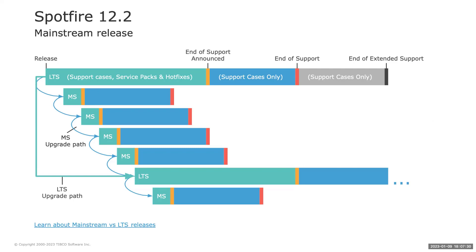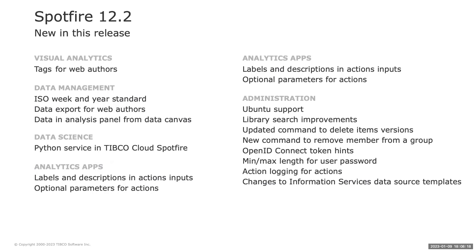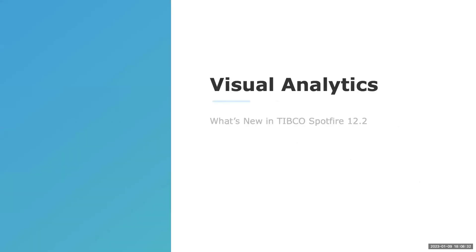Spotfire 12.2 was released just a few days back. This is a mainstream release — we have mainstream releases approximately every one to two months, dedicated to customers who want the latest features as quickly as possible. Spotfire 11.4 and Spotfire 12 are the current LTS releases and are not affected by this release, though LTS users will find these features in the next LTS. In this release, Spotfire 12.2 adds support for Ubuntu and introduces several improvements for web authors, users, and administrators.